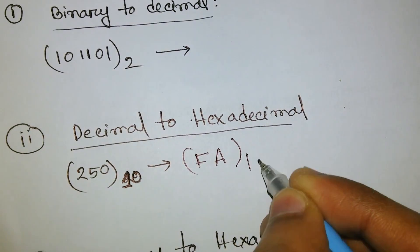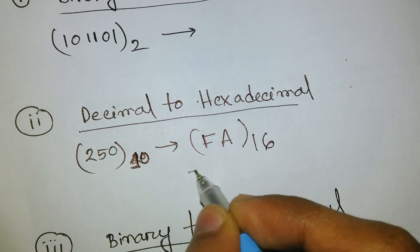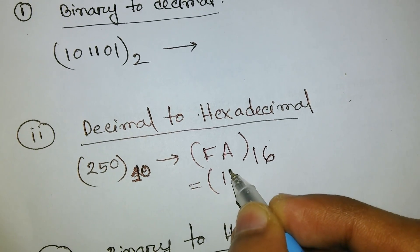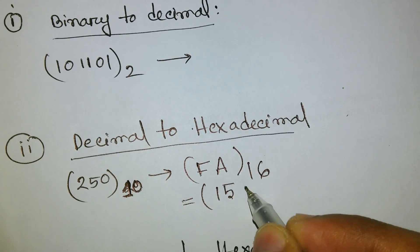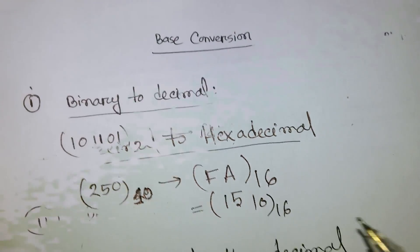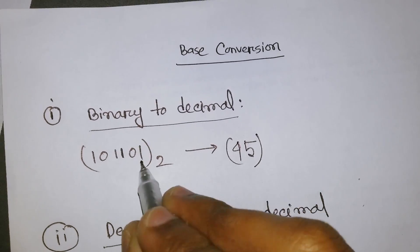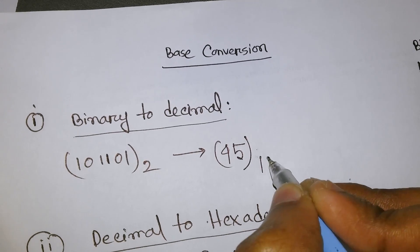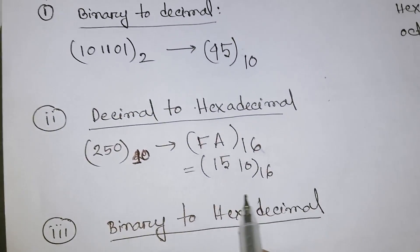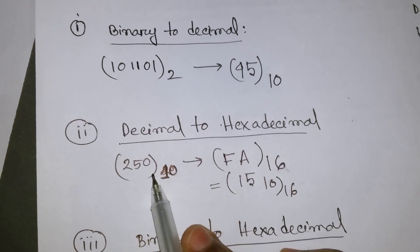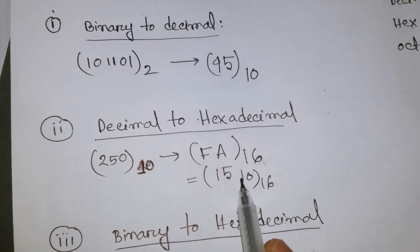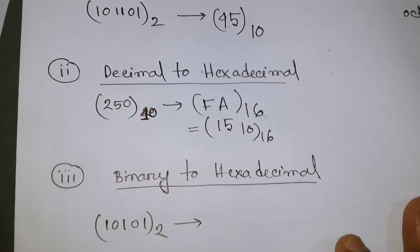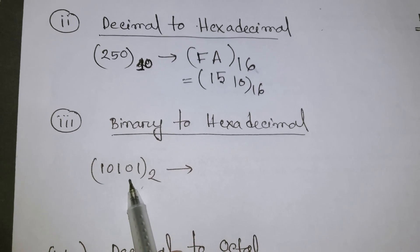FA is a base-16 number where F equals 15 and A equals 10. To recap: binary 101101 converts to decimal 45, and decimal 250 converts to hexadecimal FA, which is also written as (15)(10) in base 16.